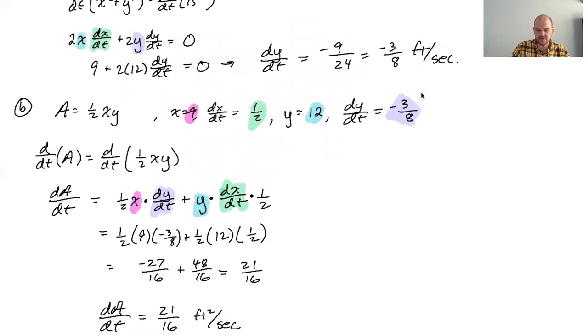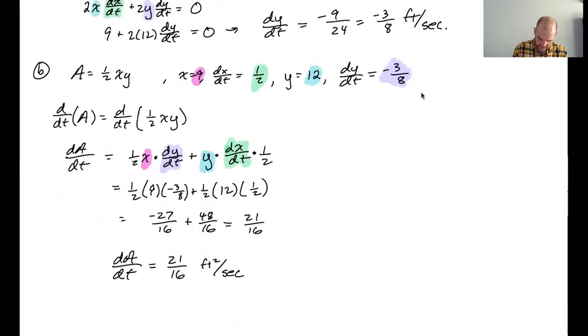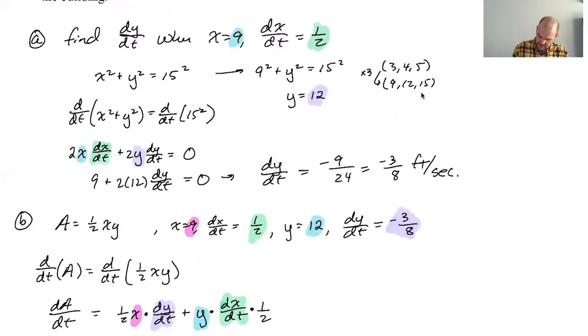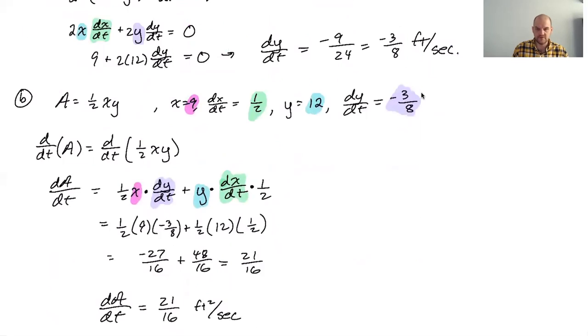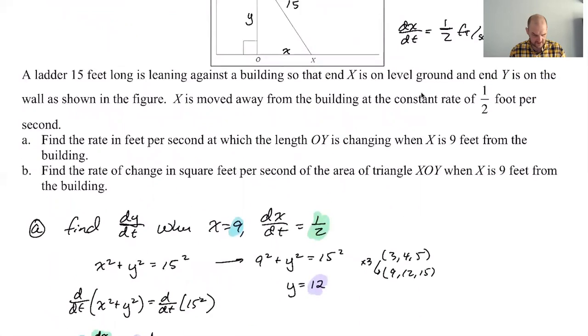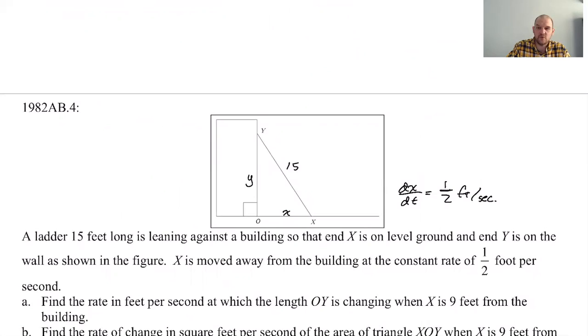So the entire thing is your answer. You need all the work, everything. It was a really good catch on my part, if I do say so myself, that I had forgotten this. You know what I should have done to make it safer? I should have just factored that one half out to begin with. And then the derivative with respect to time of X times Y. But at least I remembered it at the last second there. So I think these are our answers. So dy/dt is negative 3/8. And then dA/dt for part B I think is 21 over 16. So that is 1982 AB4. And I hope you found this helpful. And good luck.